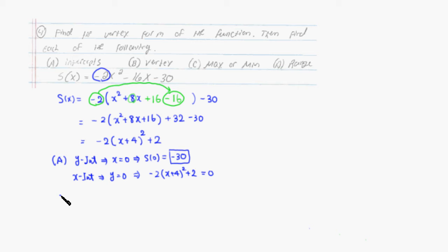Then let's solve that. First I'm going to put the negative 2 on the other side by subtracting 2. Negative 2 x plus 4 squared is equal to negative 2. Then we can just divide through by negative 2. Then we get simply x plus 4 squared is equal to negative 2 divided by negative 2, which is actually 1. Then we can take the square root of both sides. Then we get x plus 4 is equal to plus or minus square root of 1, which is 1. Remember to put plus or minus.